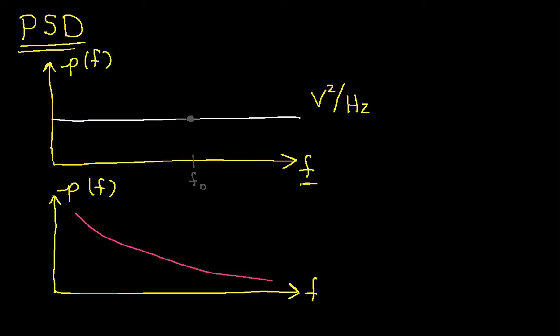We have two types of power spectral density drawn here. One we call white, and noise with a power spectral density that looks like this, we would call white noise.